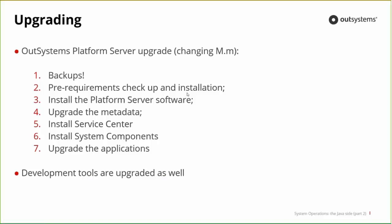When prerequisites are in place, install the platform and upgrade the metadata — this is done inside the configuration tool. One of the last steps will automatically upgrade the metadata. Then install Service Center — also done in the configuration tool — and install System Components. System Components is a part of the platform and you always need to publish the latest version via Service Center; otherwise we can't guarantee everything will work properly.